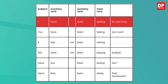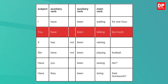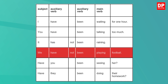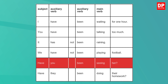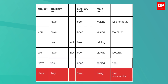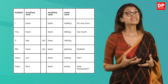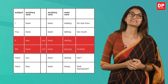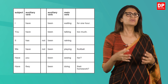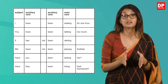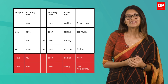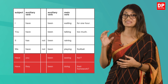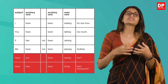Here are some examples: 'I have been waiting for one hour.' 'You have been talking too much.' 'It has not been raining.' 'We have not been playing football.' 'Have you been seeing her?' 'Have they been doing their homework?' The first two are statements following the usual structure. The third and fourth are negatives — we insert 'not' after the first auxiliary verb 'have' or 'has.' The final two are questions — notice how the subject and first auxiliary verb have exchanged places.